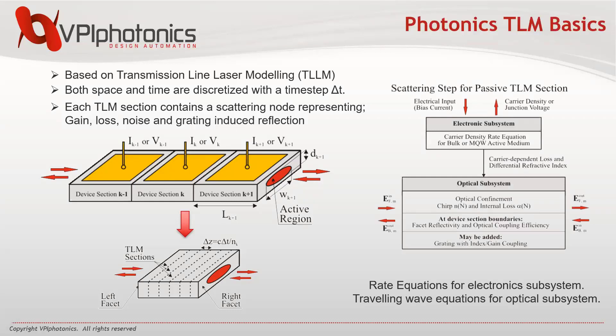Here you can see the scattering step for passive TLM sections. Each TLM subsection solves a coupled set of equations for the electronic and optical subsystems. The electronic subsystem is governed by the carrier density rate equations, which are different for different device types. The optical subsystem is governed by the same traveling wave equations for all device types. The main approximation used is that carrier density is assumed to be uniform along each TLM subsection, but may differ in neighboring subsections.